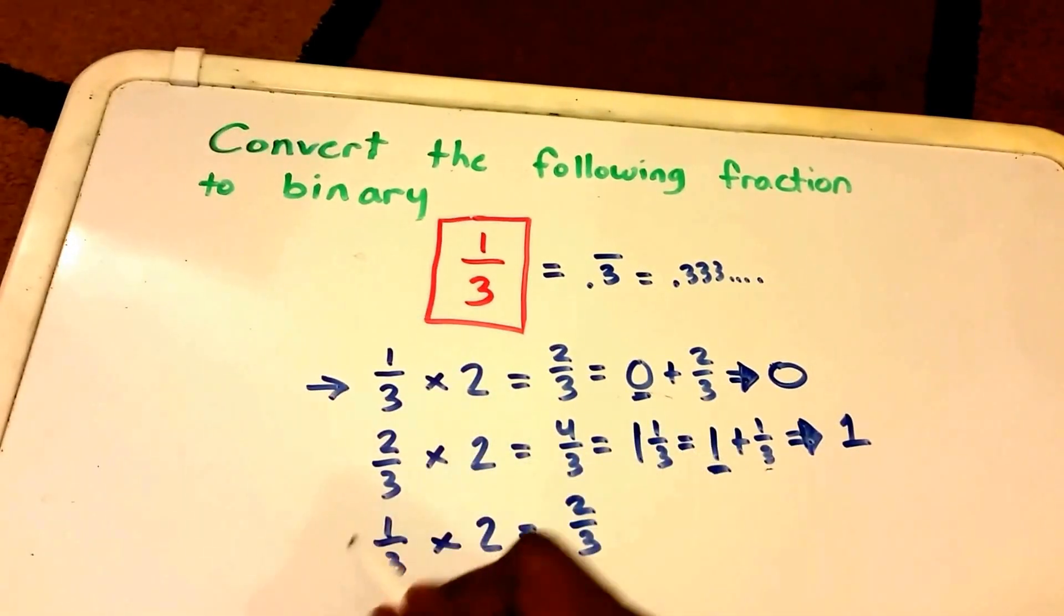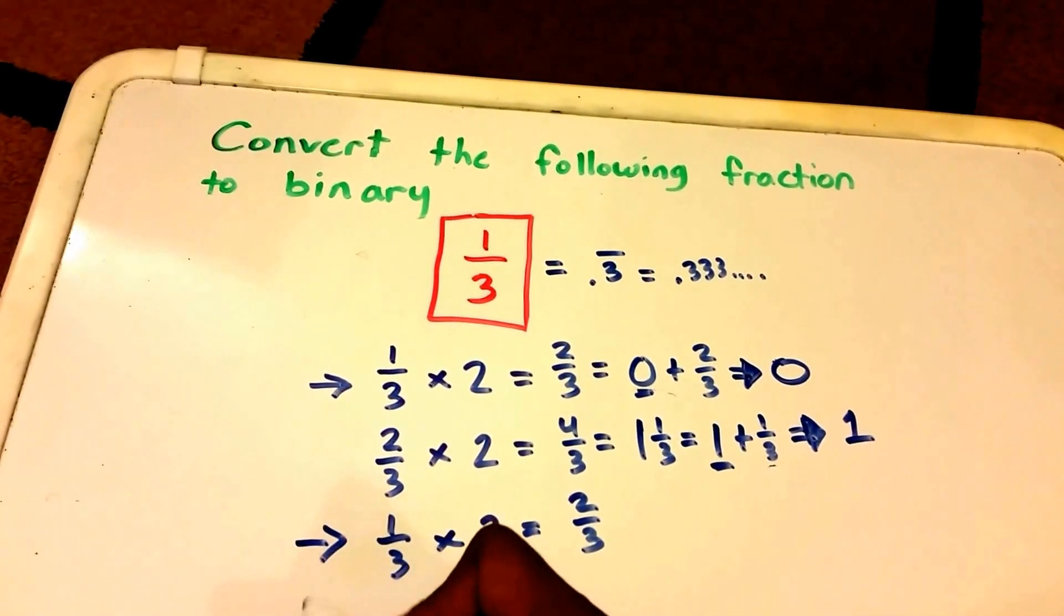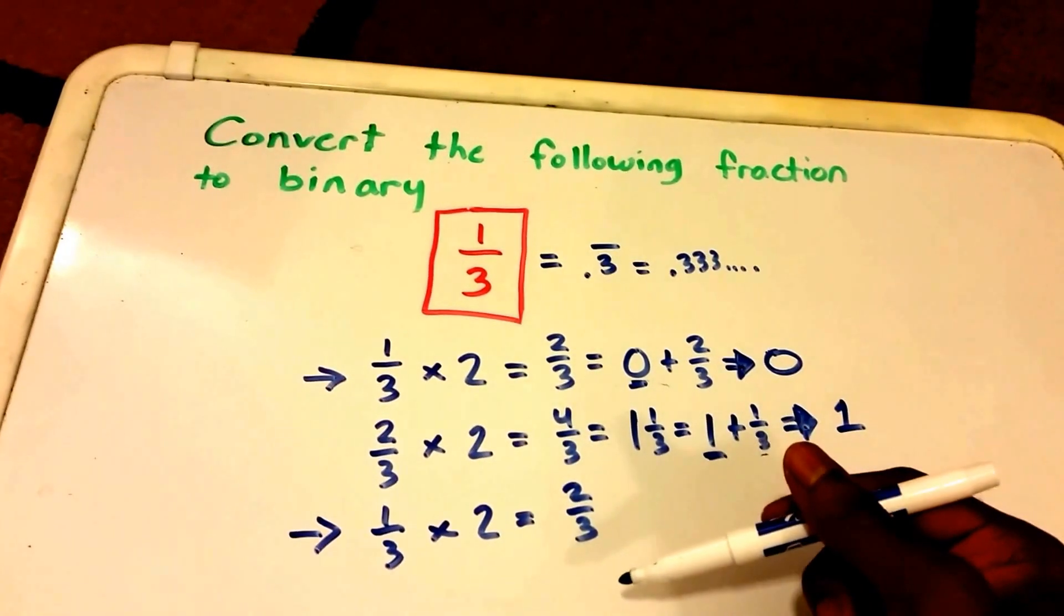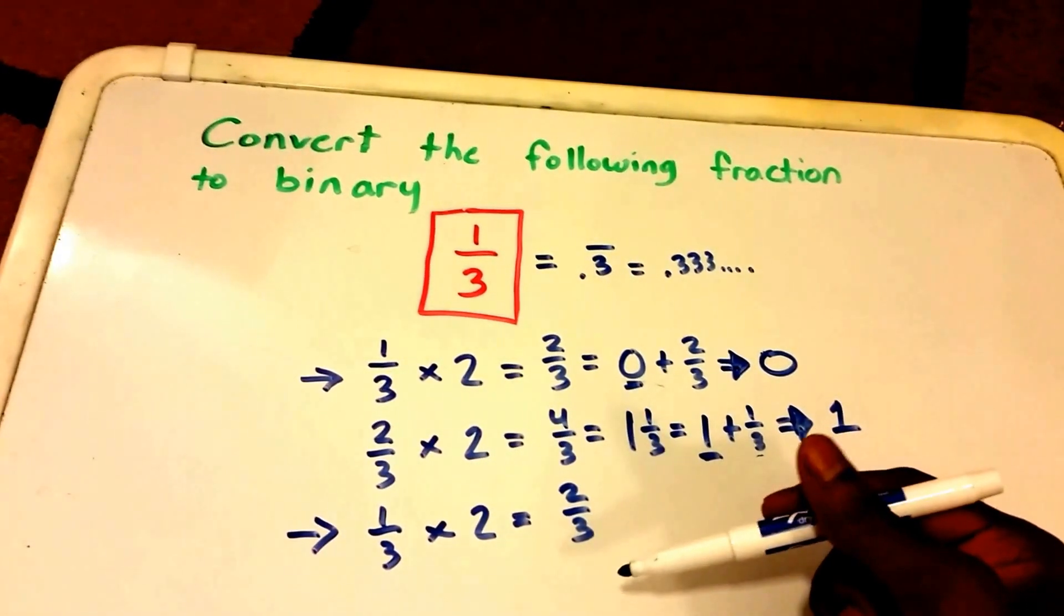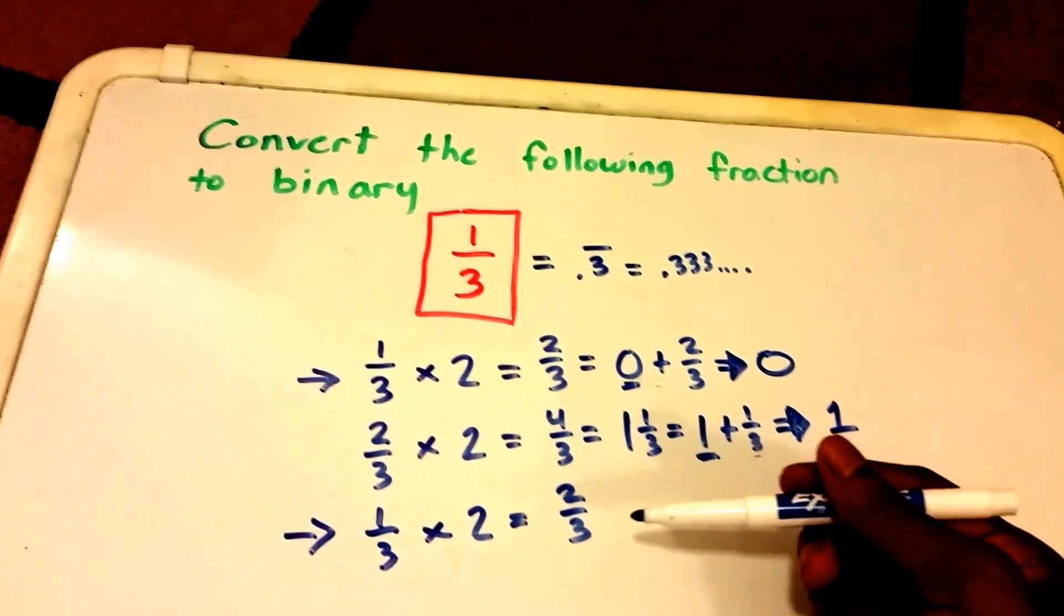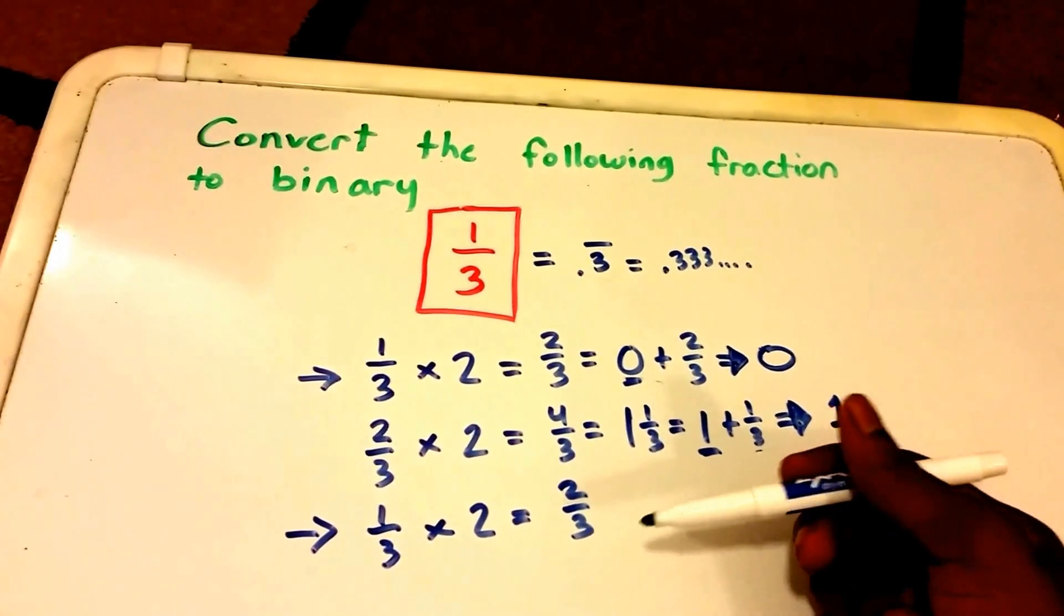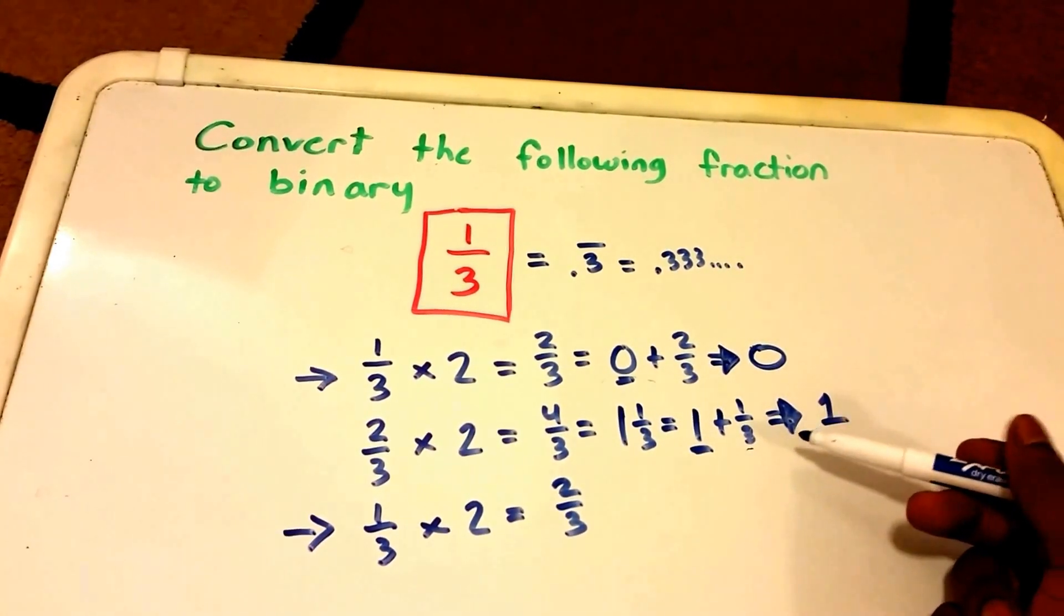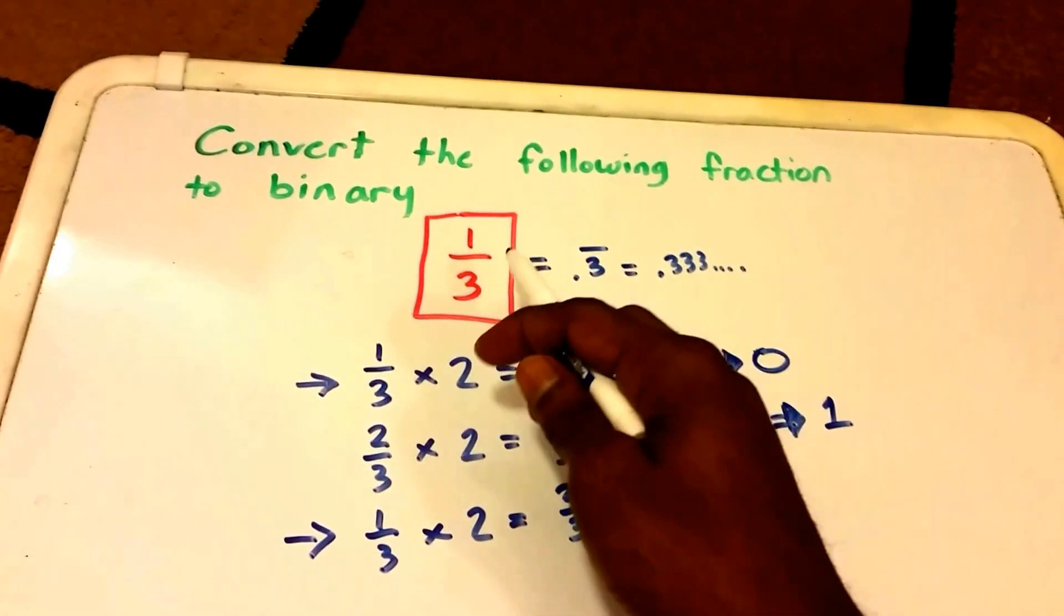This tells us that this is going to be a repeating binary number because it's very obvious that the pattern here is going to repeat. So this means we can stop here.